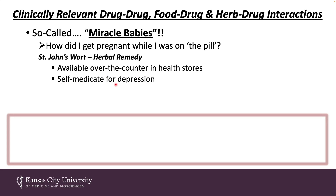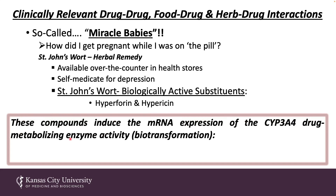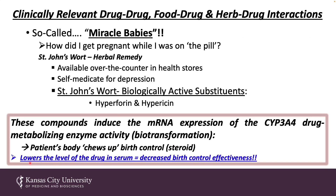The biologically active substituents of St. John's wort include two compounds: hyperforin and hypericin. It turns out these compounds induce the mRNA expression of CYP3A4 drug metabolizing enzyme activity. This enzyme is central in the biotransformation of pharmacological agents that clinicians prescribe and pharmacists dispense. This induction of CYP3A4 drug metabolism chews up the birth control, which is a steroid, lowering its serum level and decreasing its effectiveness. This is a classic case of herb-drug interaction in your future patients.